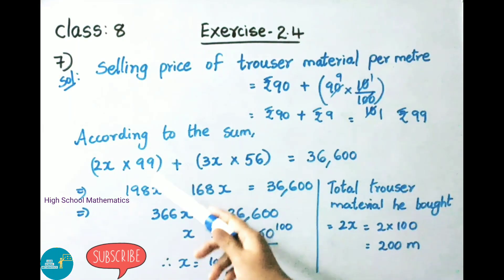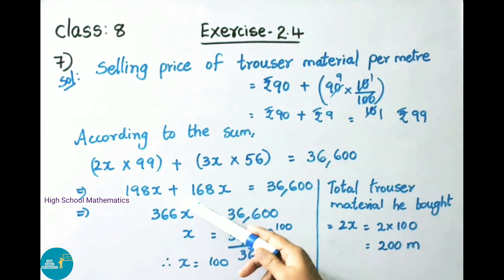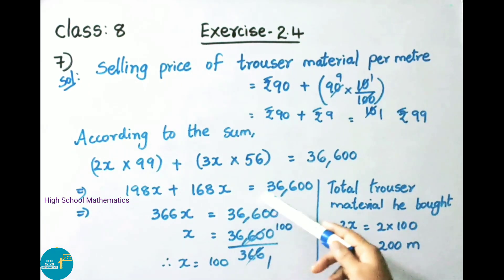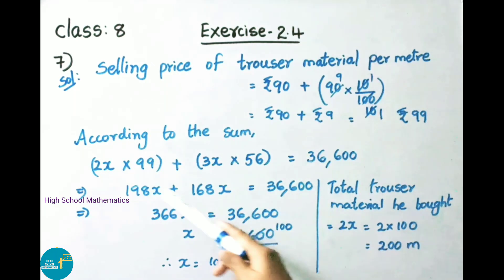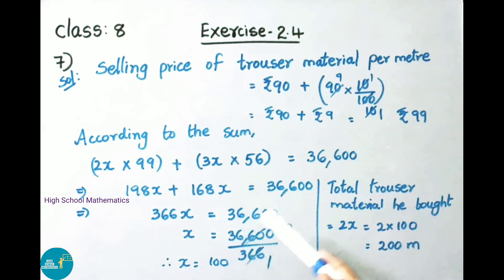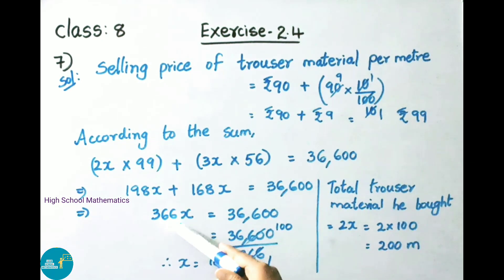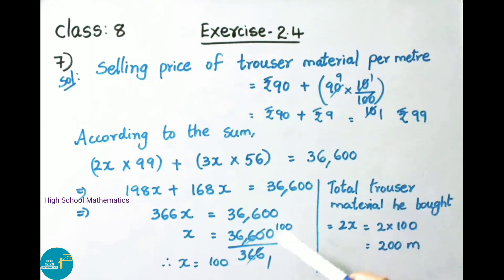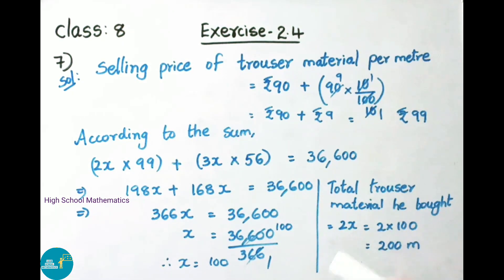That implies 2x into 99 is 198x, plus 3x into 56 is 168x, equals 36,600. Adding both we get 366x equals 36,600. So x equals 36,600 divided by 366, which gives x equals 100. Therefore the total trouser material he bought is 2x, that is 2 into 100, which is 200 meters.